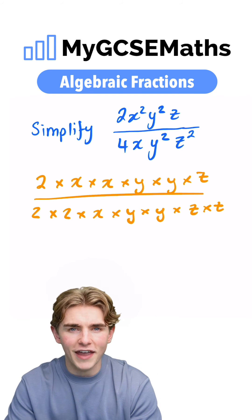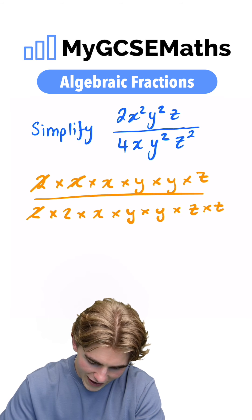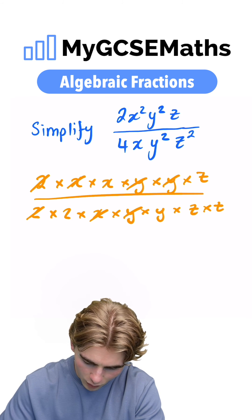We can then cancel out any common factors. So we can cancel 2 and 2. We have x and x. We have y, y, y, y. We have z and z.